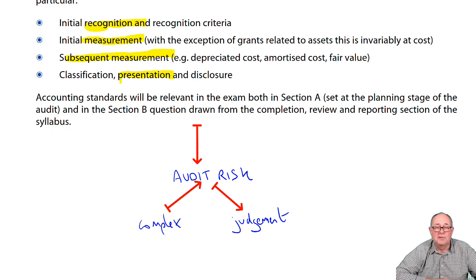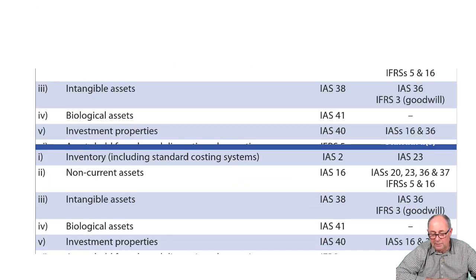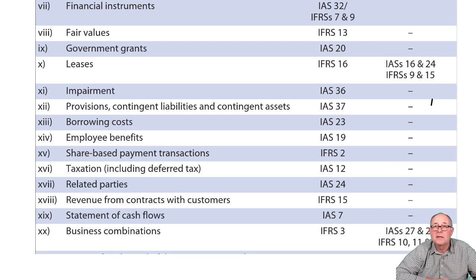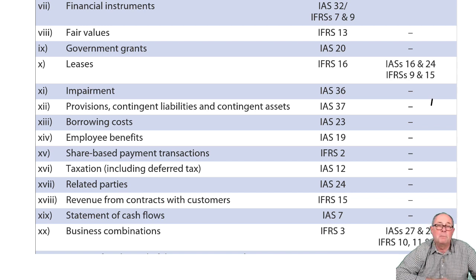There's a big list of the standards across here. They look a bit intimidating, but as I said, the only thing they don't want to know is the standard number — they really don't — and they don't want to know the name of the standard. They just want to know under that standard what you recognize, where you recognize it, and how you measure it. Keep that at the back of your mind as you're studying.